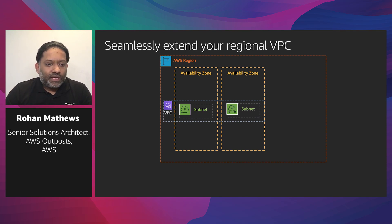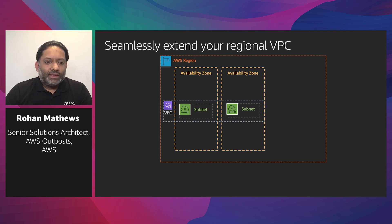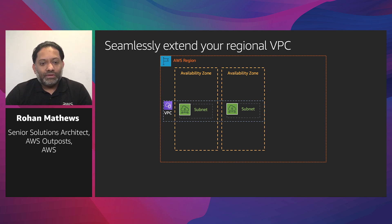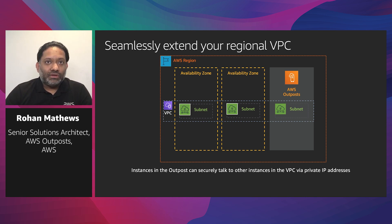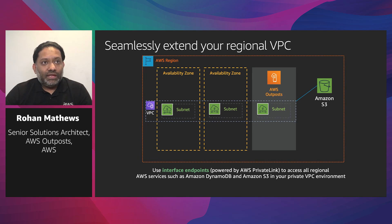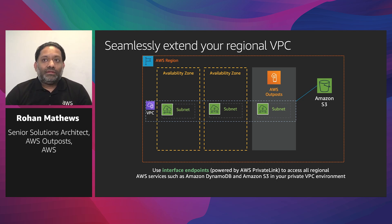How are we seamlessly extending services from the region to Outpost? Starting with our VPC construct: you can seamlessly extend the VPC from the region to on-premise by creating a subnet and associating it with the Outpost. Once you've created that subnet, you can easily launch services into it just as you do in the region today. Instances on the Outpost can securely talk to instances in the region via the VPC through private IP addresses. We can also enable interface endpoints powered by AWS PrivateLink to access regional services like DynamoDB and S3 securely through your VPC.